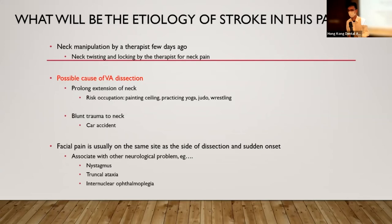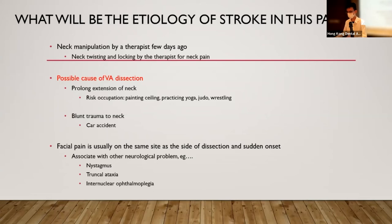The facial pain in vertebral artery dissection is usually on the same side as the dissection and of sudden onset. Besides facial pain, patients will typically have other neurological symptoms such as nystagmus, truncal ataxia, or internuclear ophthalmoplegia — a specific eye movement finding in brainstem lesions.